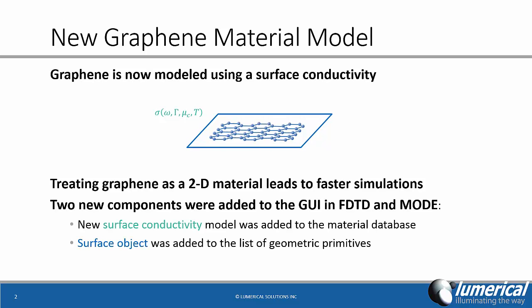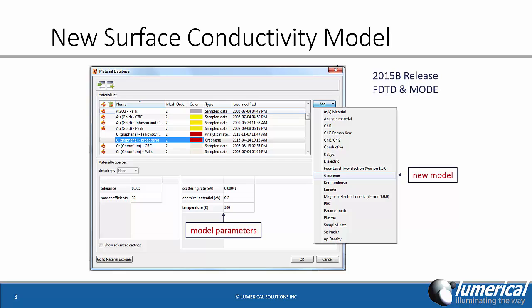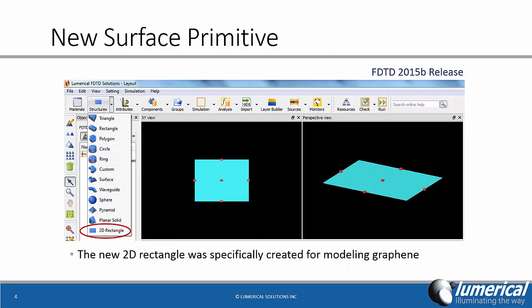In order to incorporate the new surface conductivity model into the existing workflow, we have added two new key components to the user interfaces in FDTD and mode. A new surface conductivity model has been added to the materials database and a new surface object has been added to the list of geometric primitives. Here you can see how the new surface conductivity model looks in the materials database and how the new geometric primitive can be added to an FDTD simulation.